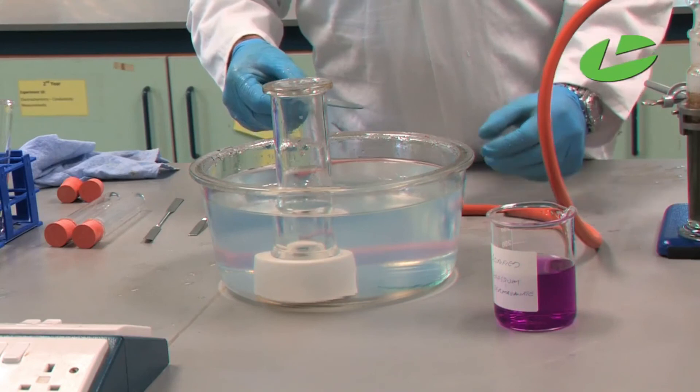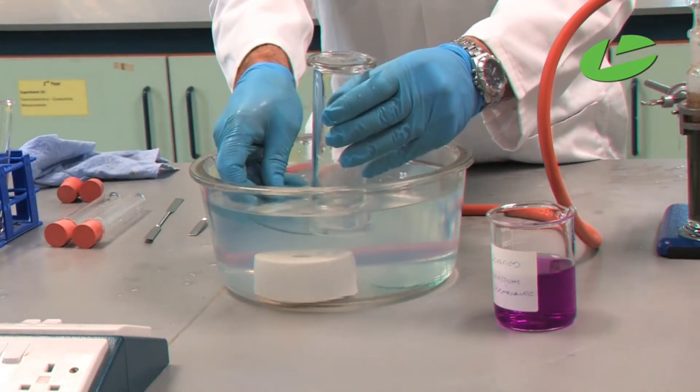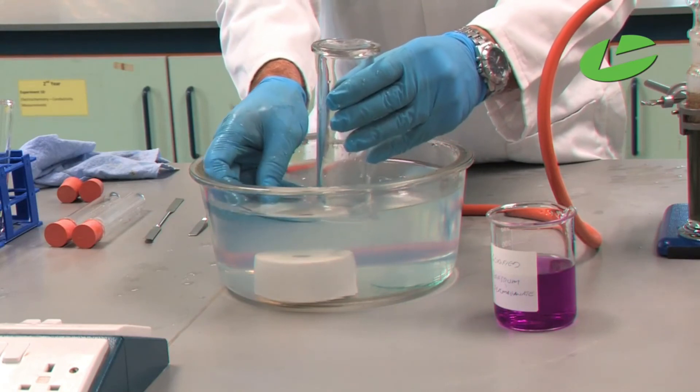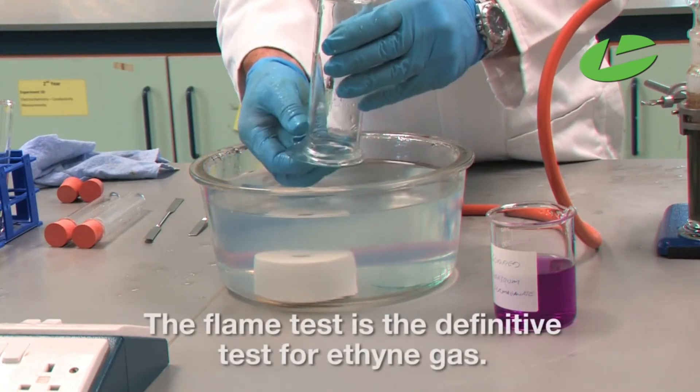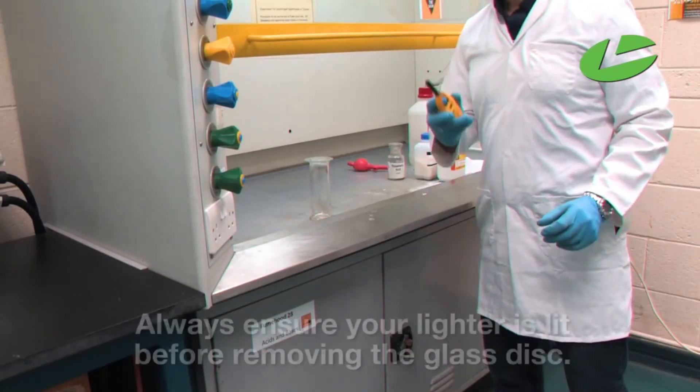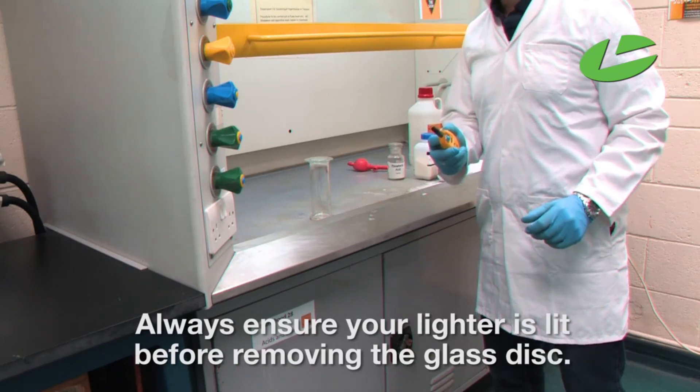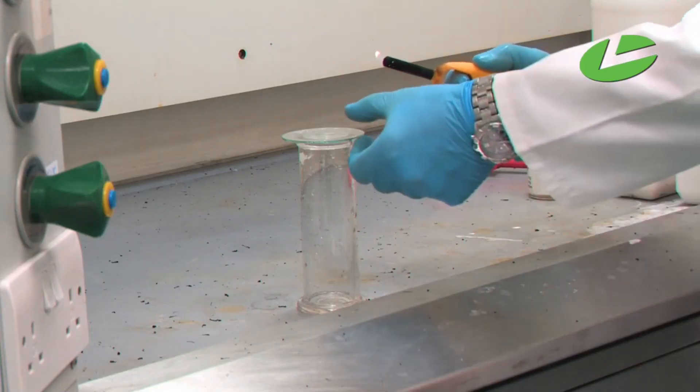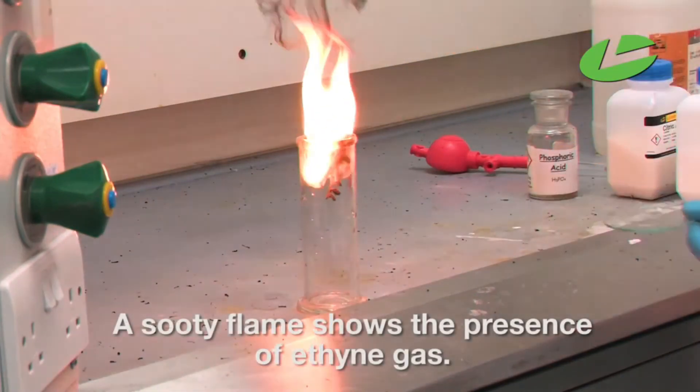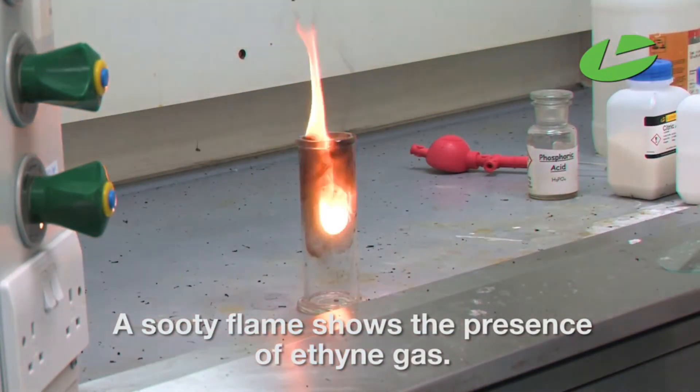Now take out the gas jar by slipping the glass disc underneath before lifting it from the water. Put the jar in the fume cupboard. Always make sure your lighter is lit before you remove the glass disc. You can see the sooty flame - we've definitely produced ethyne gas.